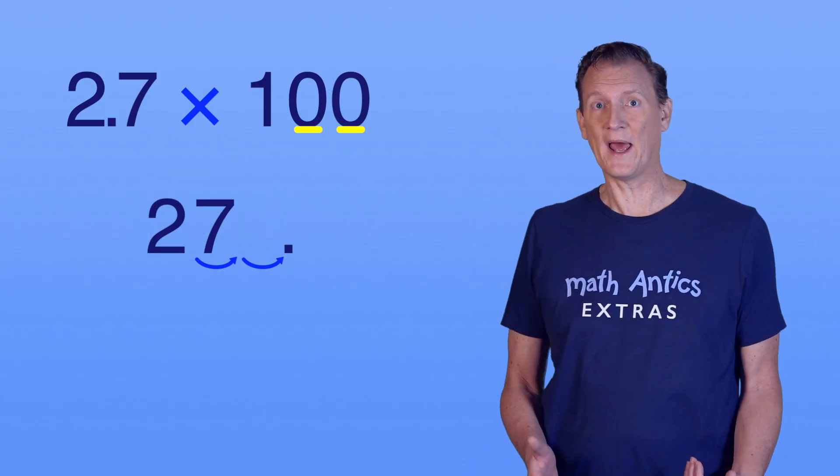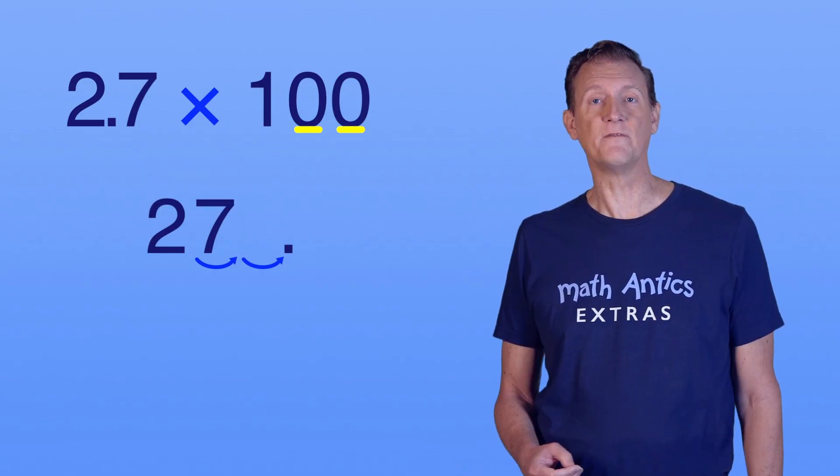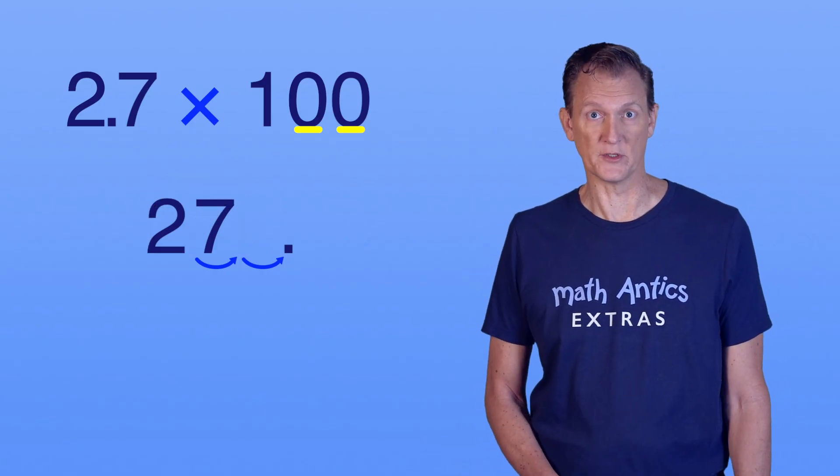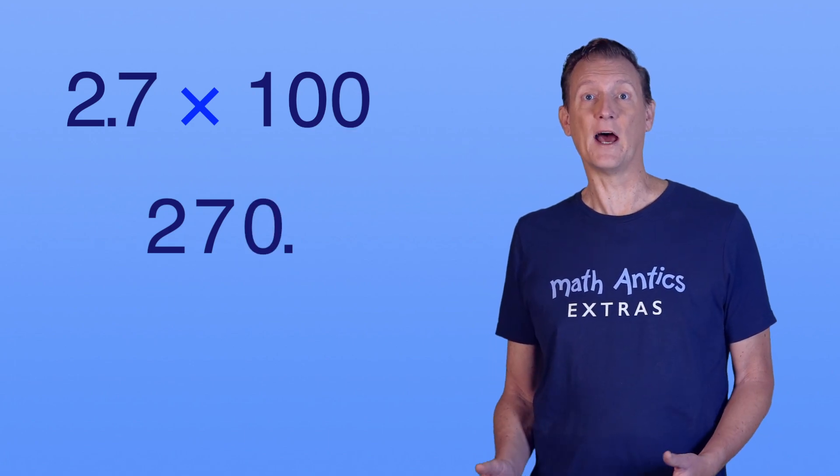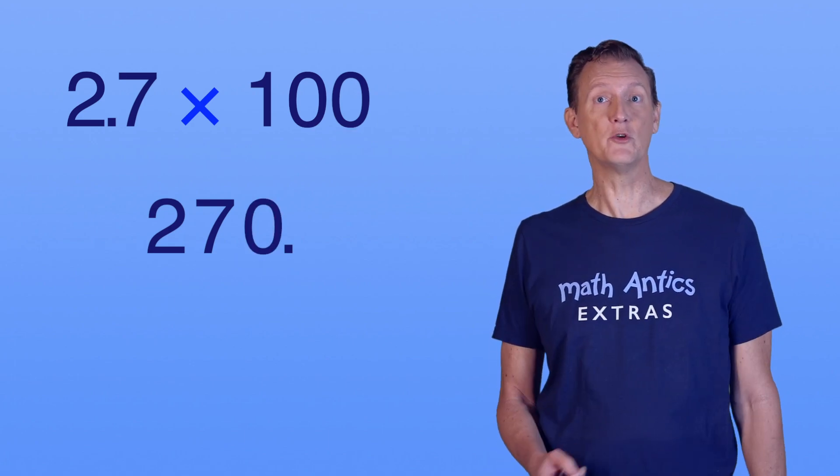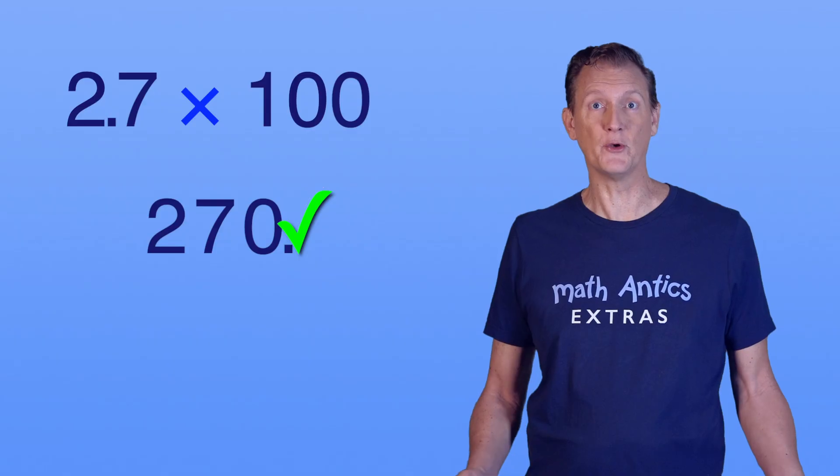Whenever you shift the decimal point past the digits in your number, you need to fill in the missing number places with zeros. That's better. Now our number is 270, and 2.7 times 100 is 270.